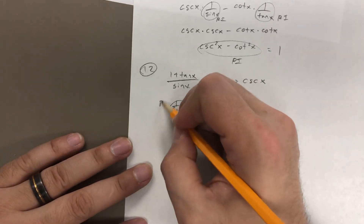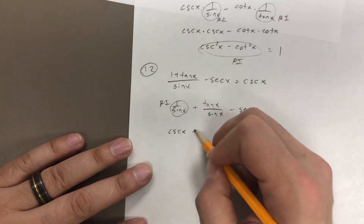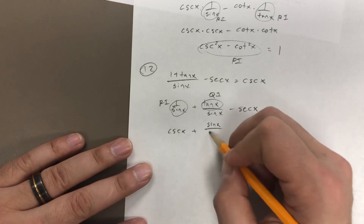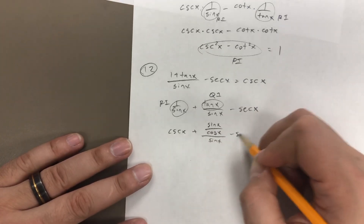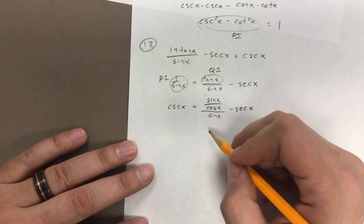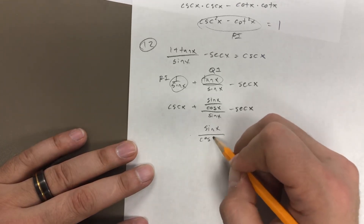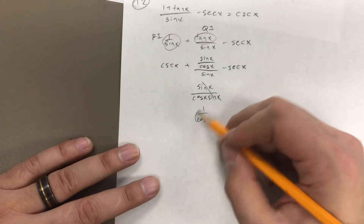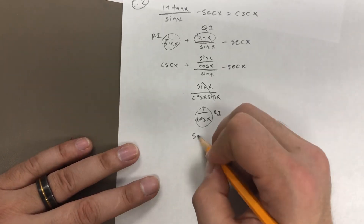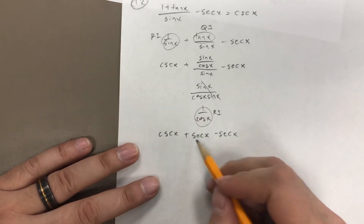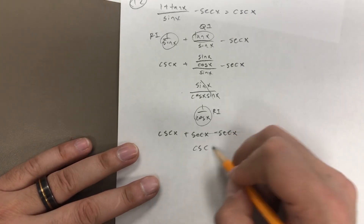1 over sine of x is a reciprocal identity — that turns into cosecant. Then tangent of x, using a quotient identity, becomes sine of x over cosine of x, all over sine of x. When you have two denominators like that, they multiply together: sine of x over cosine of x times sine of x. The sine of x cancels, leaving 1 over cosine of x, which is a reciprocal identity that turns into secant of x. So the secant of x's cancel out, and you're left with cosecant of x as your answer.